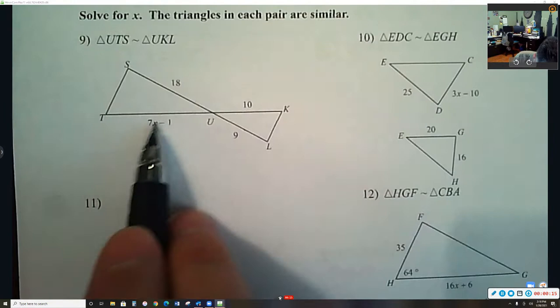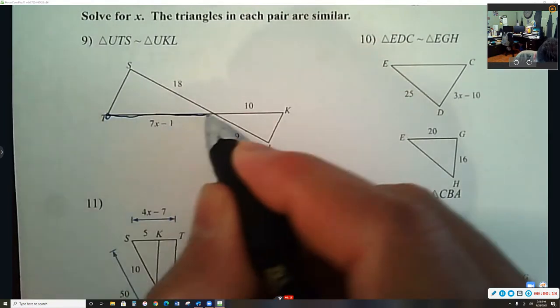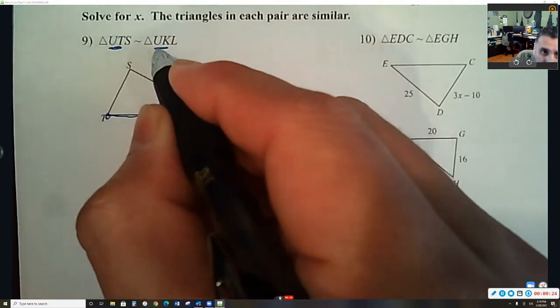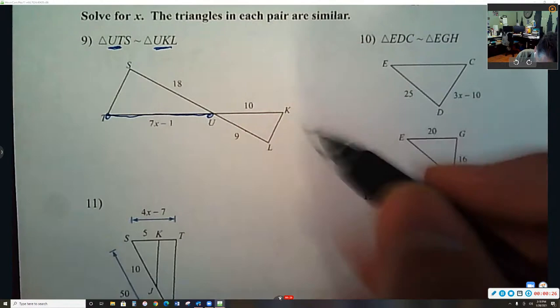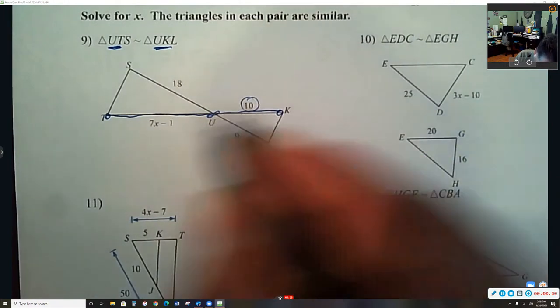So watch here that here's the variable that's going across the side TU. TU is these first two letters, so I know the corresponding side is going to be UK. So where's UK? Here's UK. So I know this side corresponds with this side.